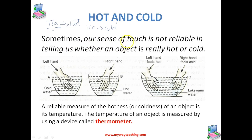Sometimes our sense of touch is not reliable in telling us whether an object is really hot or cold — if it is not too hot or not too cold. Sometimes our sense of touch is not at all reliable, meaning if it is neither too hot nor too cold, we can't even say it's hot and we can't even say it's cold. In order to understand this point, we'll take up an activity.